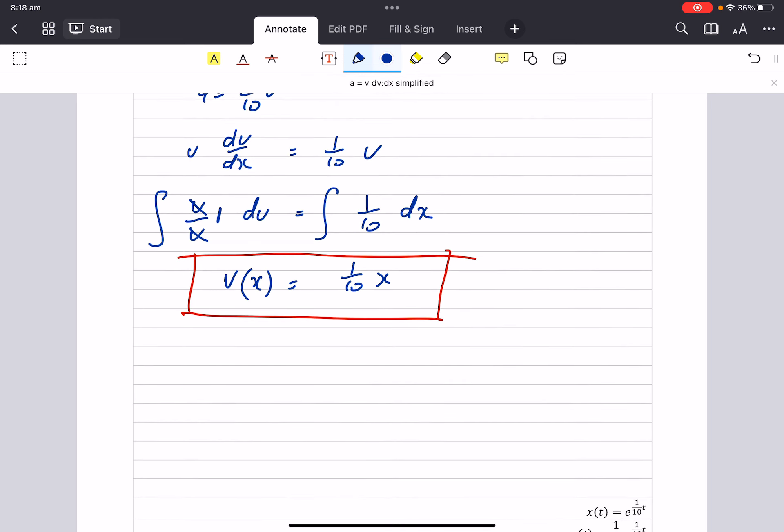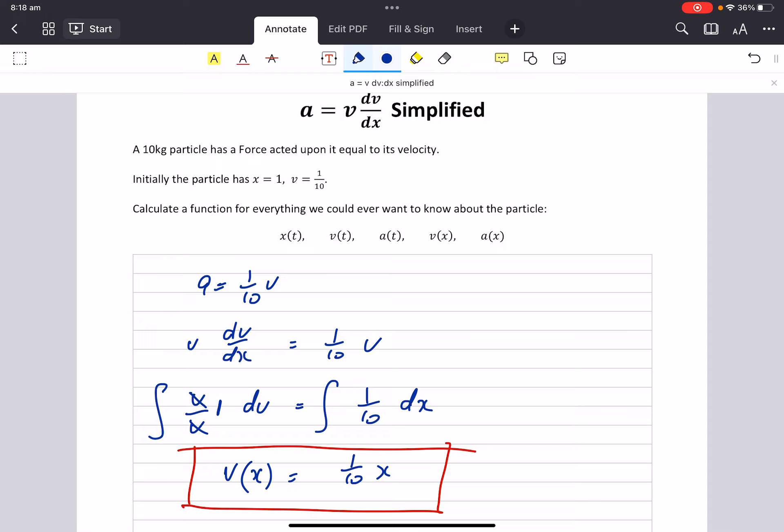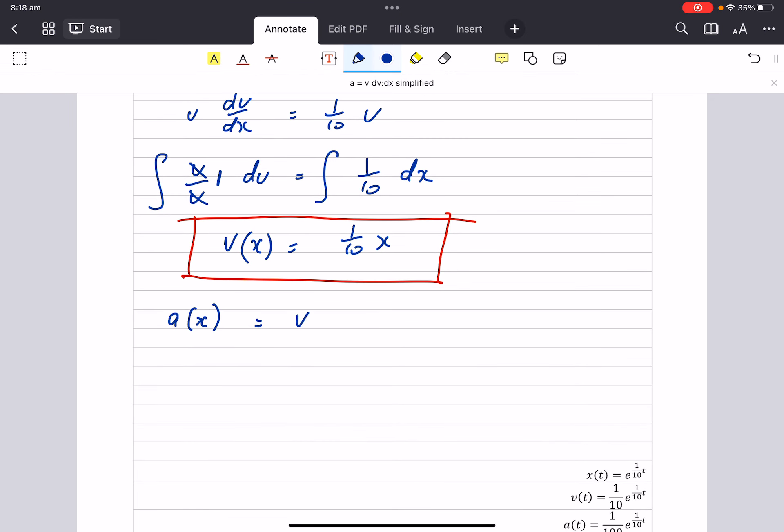Now I'm just going to go around in no particular order. Let's focus on an a of x. So a is v dv dx. I'm going to use that thing again. A equals v dv dx.